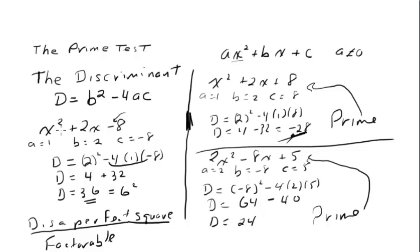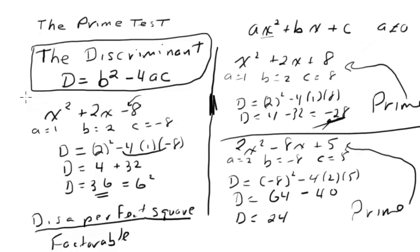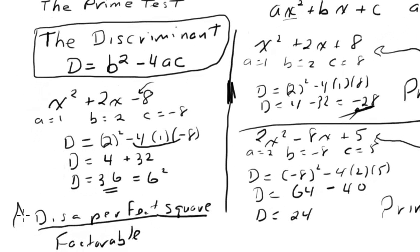So we take the discriminant, which is b² - 4ac. And when I calculate it out, if the discriminant is a perfect square, then it's factorable. If it's not a perfect square, then it's prime.